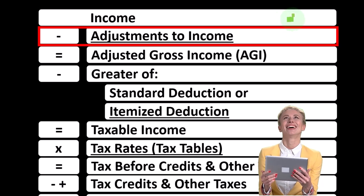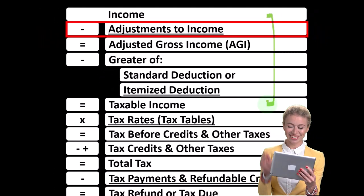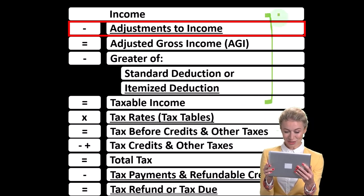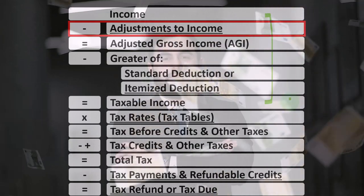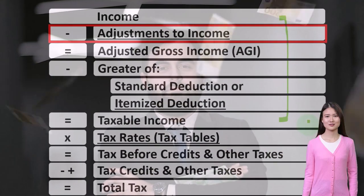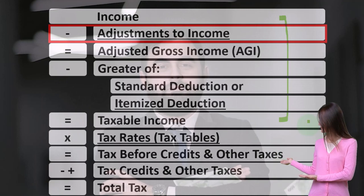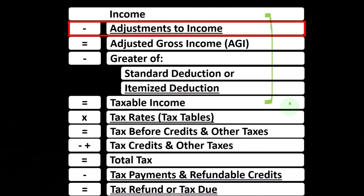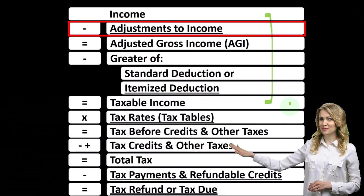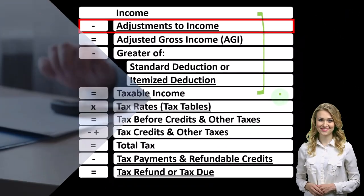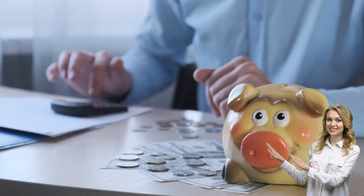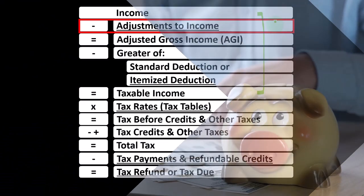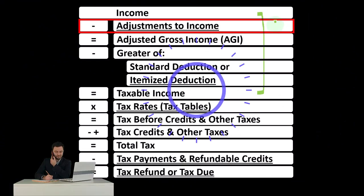Remembering that the first half of the income tax formula is in essence an income statement, although a strange one. We've got the income minus the equivalent of the expenses — those being the deductions — getting us down to the equivalent of net income, that being taxable income. The objective is flipped on its head: we want taxable income as low as possible, as opposed to normally where we want net income as high as possible.